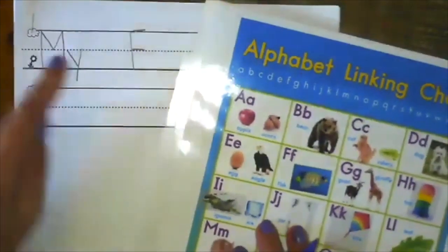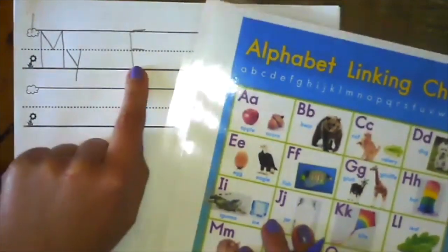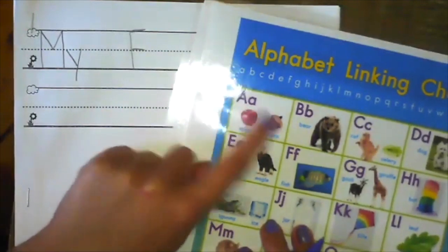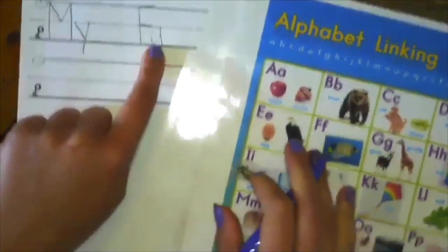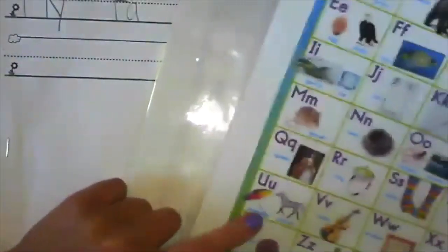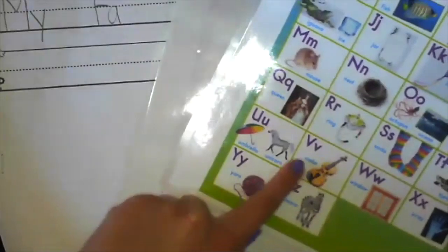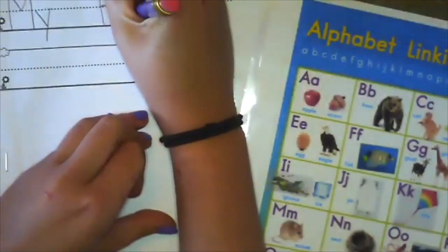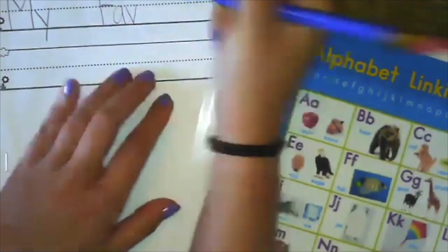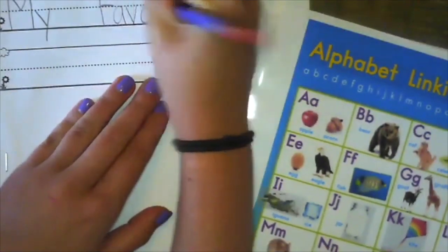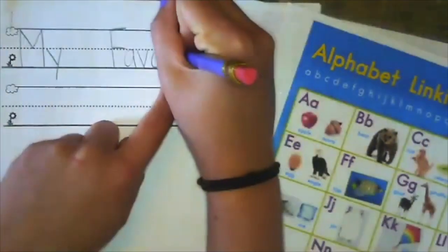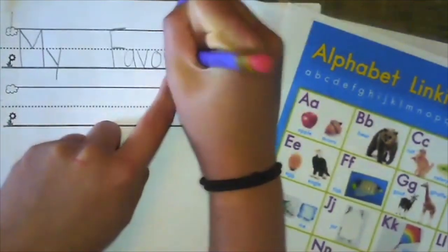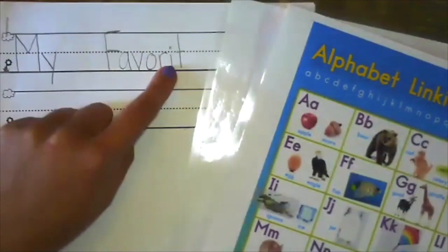Because every word in the title gets an uppercase letter. My FAV, A-OH, long A, A acorn, A. My FAV, what do you hear next? I hear V violin. My FAV-OR, OO, O-R spells OR, OR, OR. See how that sight word is hidden inside the bigger word favorite? I-T spelled IT, IT. My favorite.